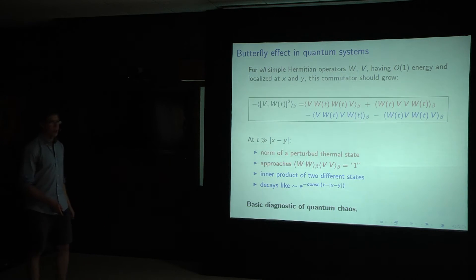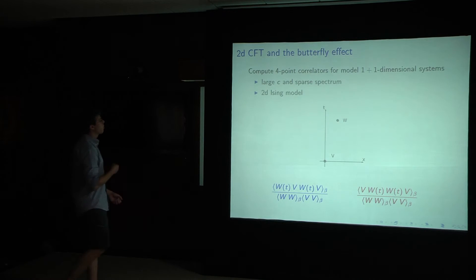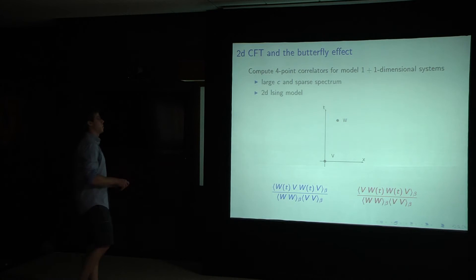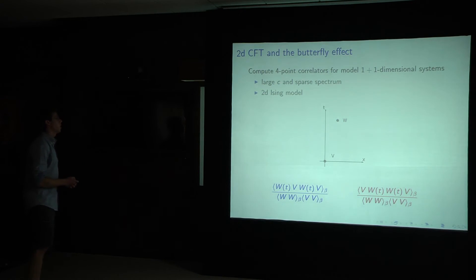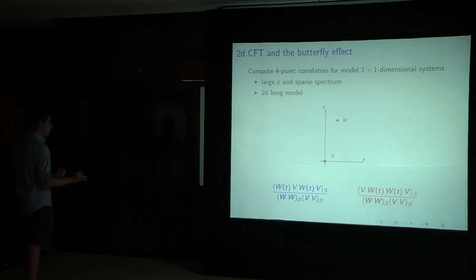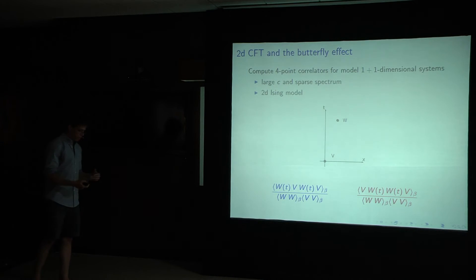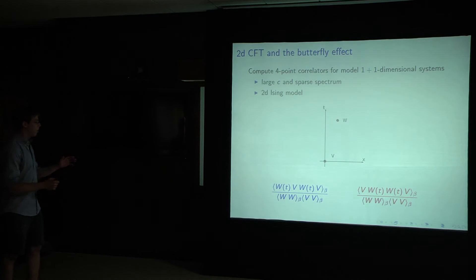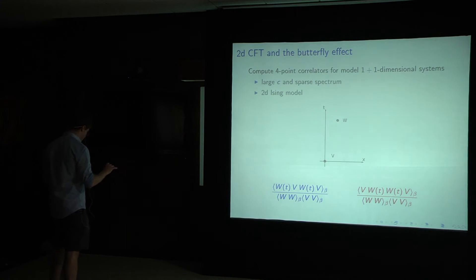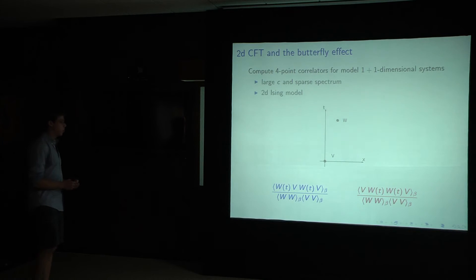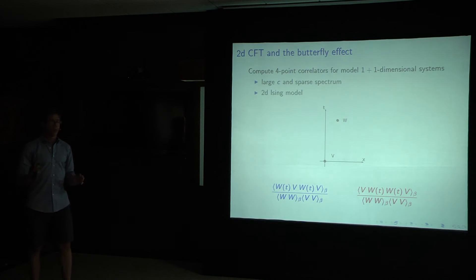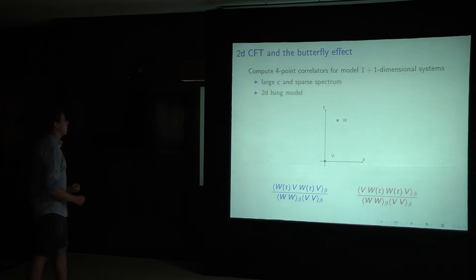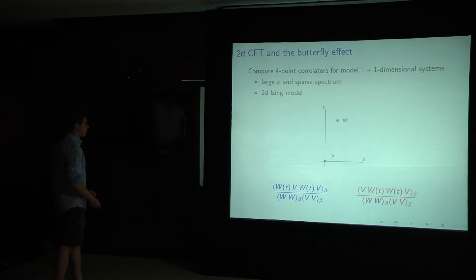In order to evaluate this, let's now turn to 1 plus 1 dimensional conformal field theory. So my goal is to compute the four point functions for two different model 1 plus 1 dimensional systems. First, a large central charge CFT with a sparse low-lying spectrum. And second, the 2D Ising model. And here, for convenience, I've left, and I will do for the rest of the time, I've left these blue, these inner product of two different state correlation functions. I'll leave them blue, and I'll leave the norm of a perturb thermal state correlation function red. I know the font is hard to read in the back, so hopefully this will be clear. And also, I've properly normalized them by the two point functions.